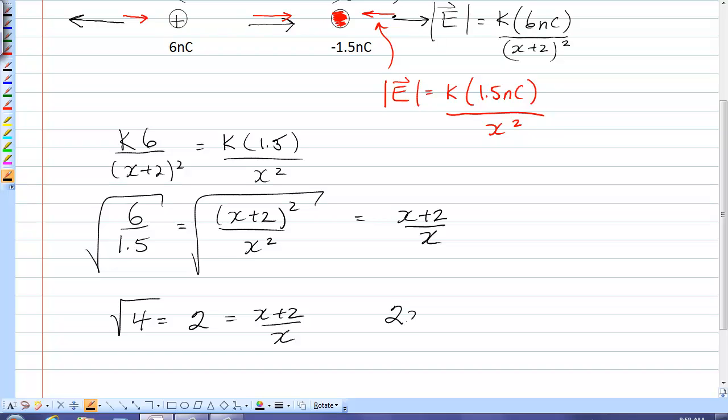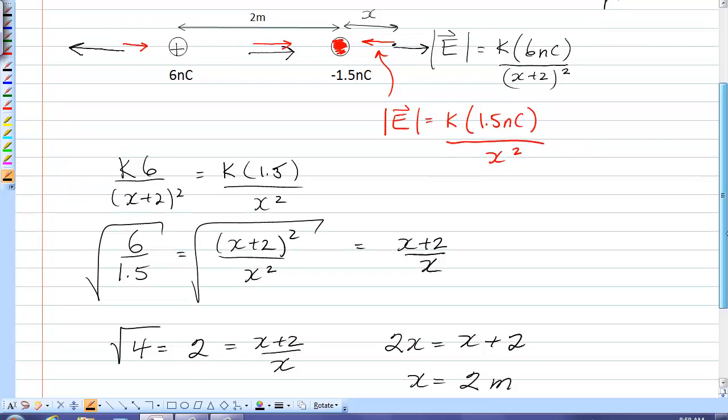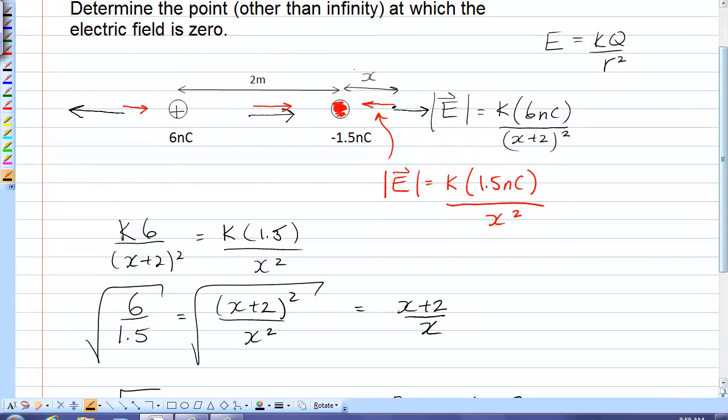So solving that, I simply have 2x equals x plus 2, or x is equal to 2 meters. So the position where the electric field is zero is 2 meters to the right of the smaller charge.